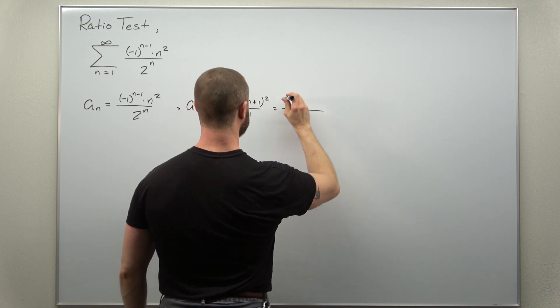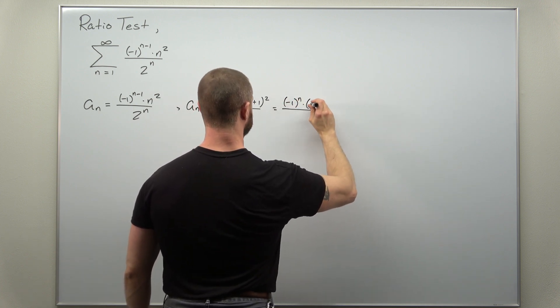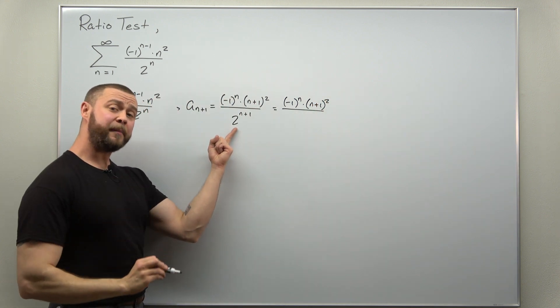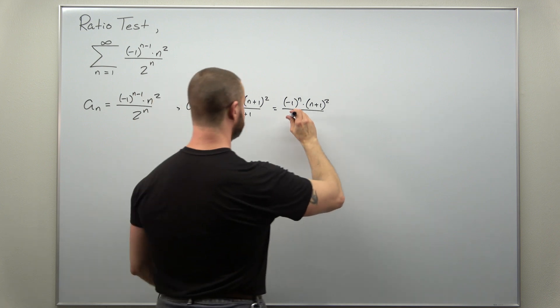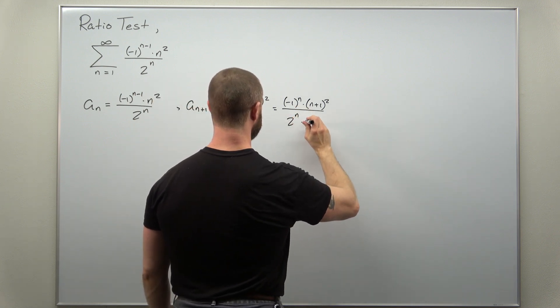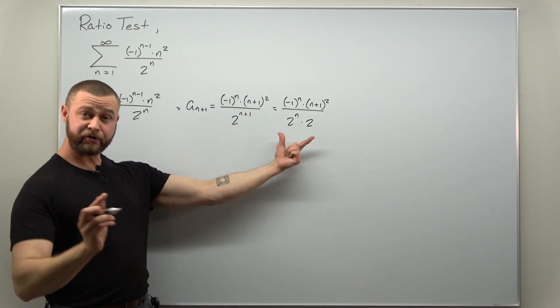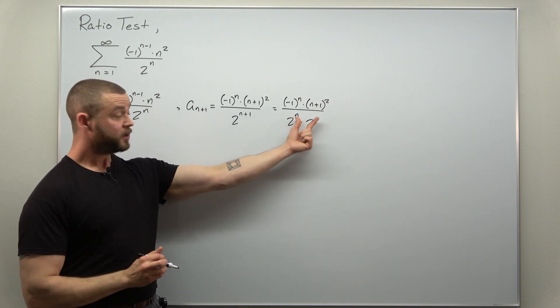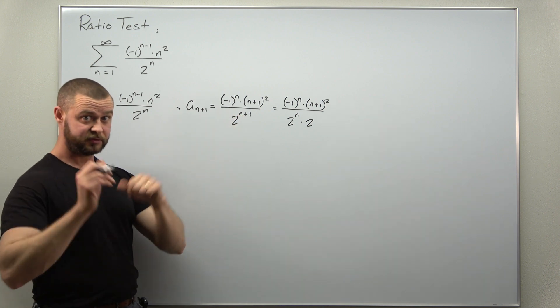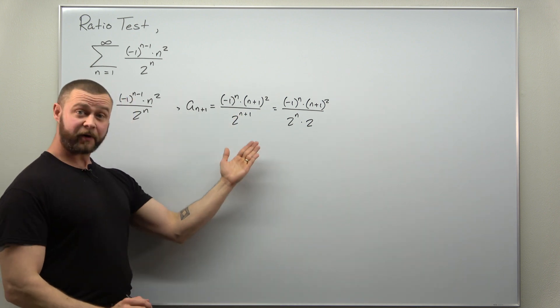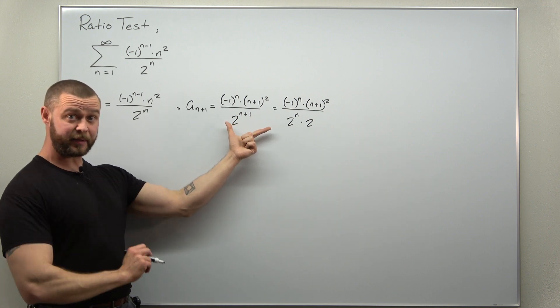We're going to keep the numerator the same, but I'm going to split that denominator up using basic exponent rules as two to the n times two to the one or just two. And make sure you're comfortable with that. Again, you're multiplying bases here. You would add those exponents to get your previous denominator. All right, that's about as far as we can go with simplifying a_{n+1}.